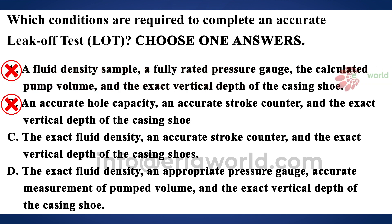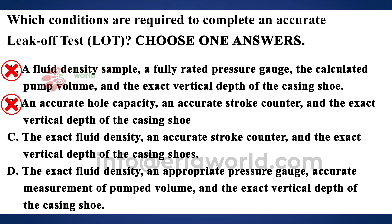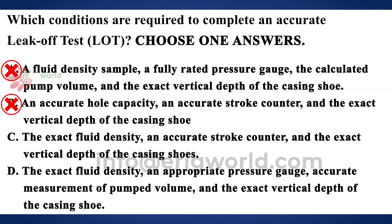Option C includes exact mud density, which is correct, but also 'accurate stroke counter.' If you calculate volume using a stroke counter, no machine operates at 100% efficiency, so an efficiency factor must be considered. A stroke counter will not give you the exact volume pumped, so option C may not be right.